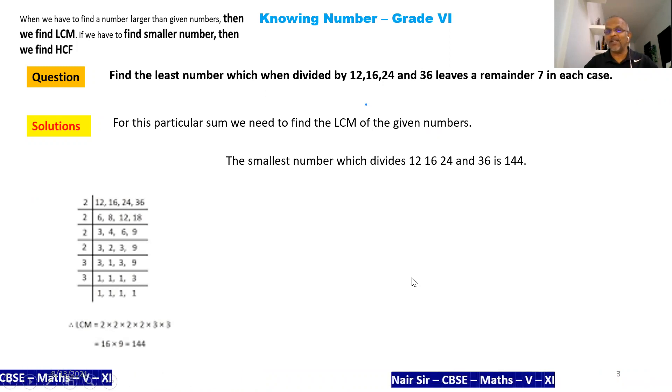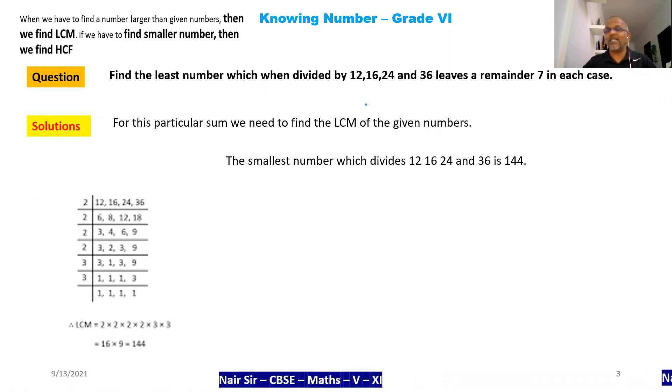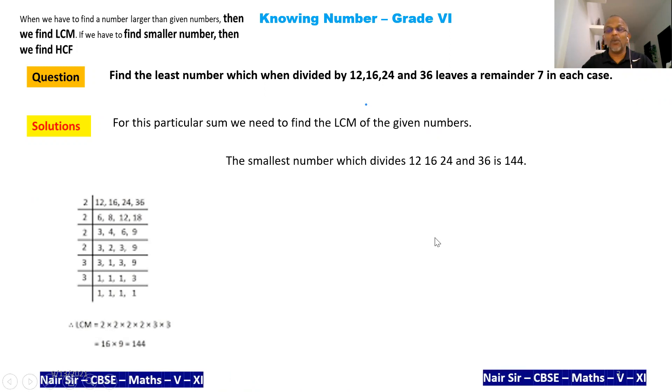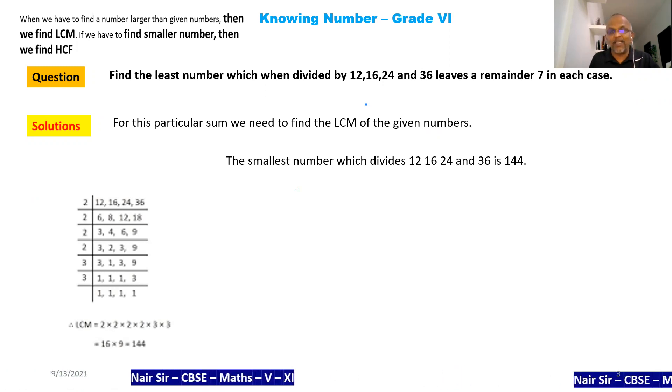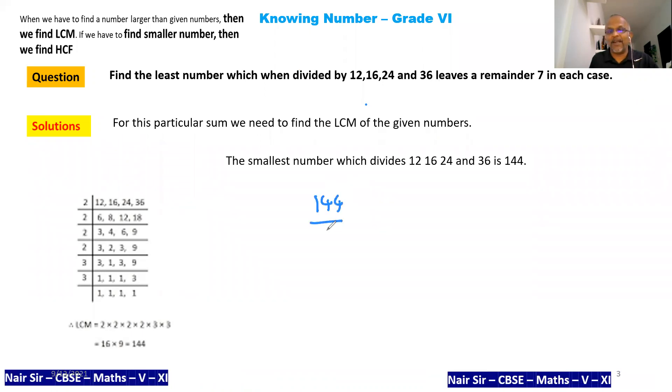What do I do? The smallest number which divides 12, 16, 24, and 36 is 144. If you try doing this for your example, let's say 144 divided by 12, you can do this.